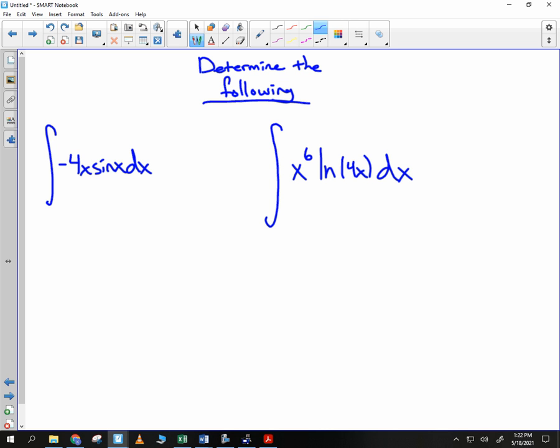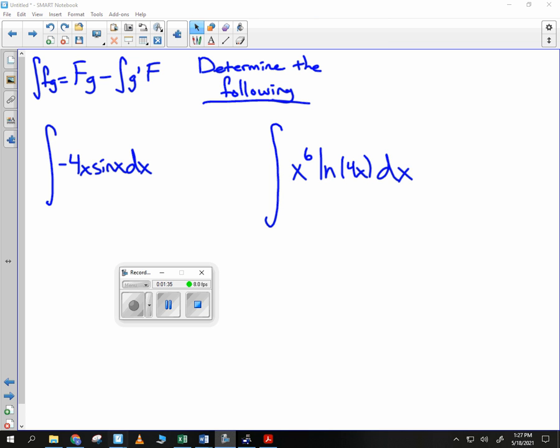So I'm going to give you the types of problems that you should know by now. Here are two integrals that you need to be able to determine using integration by parts, which is the integral of Fg is equal to big F little g minus the antiderivative of g prime, big F. I'm giving you about two and a half minutes. Ready? Go.